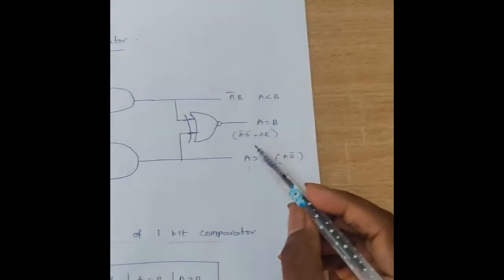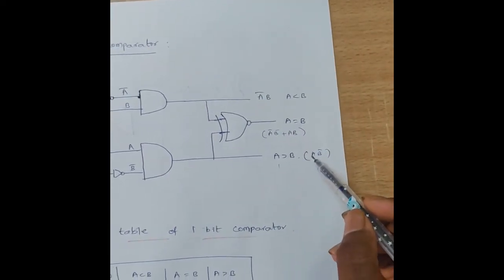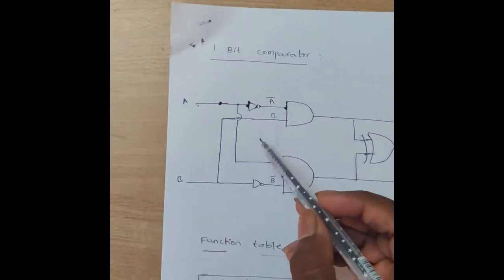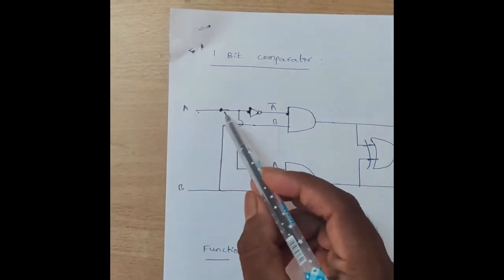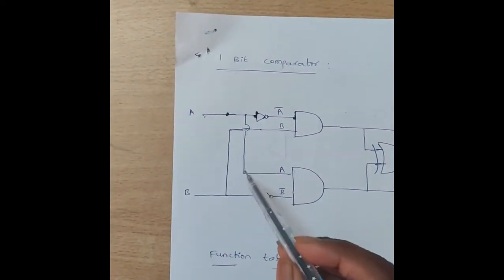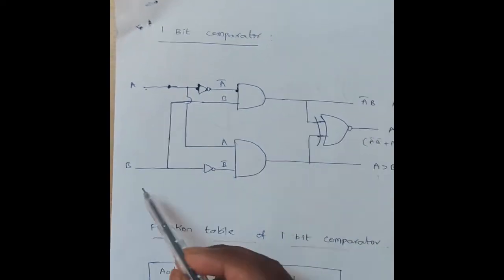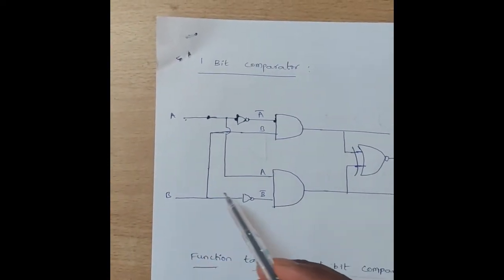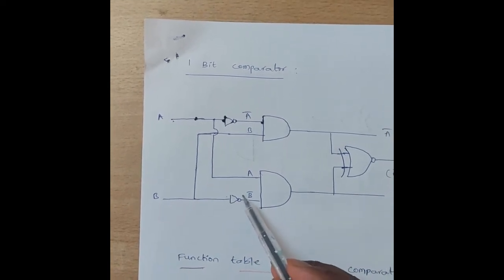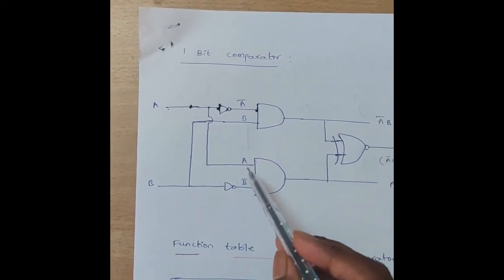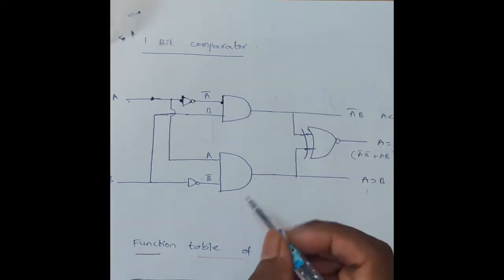For the A greater than B condition, the expression is A·B-bar. Here A is directly given to the AND gate, and B is given to a NOT gate. The output of the NOT gate is B-bar, and the output of the AND gate is A·B-bar.